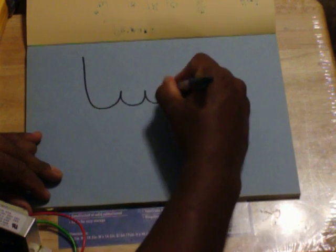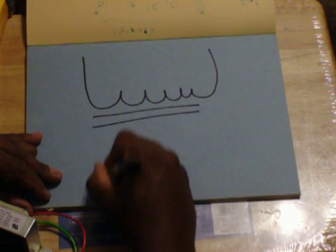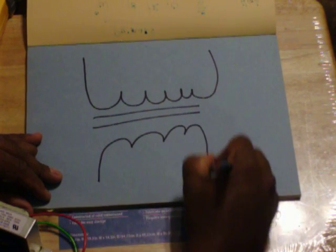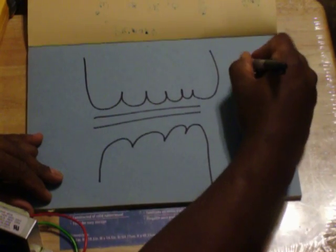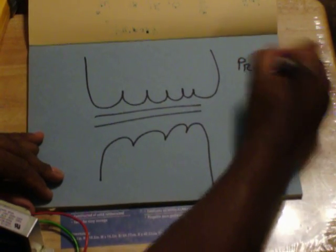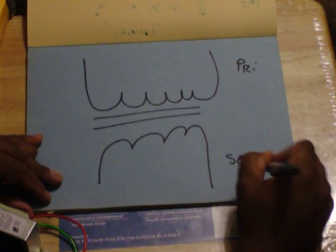This is a symbol for a transformer. You have a winding, a core, a second set of windings. The set of windings that you apply power to is called your primary. You're going to get a voltage out of your secondary.